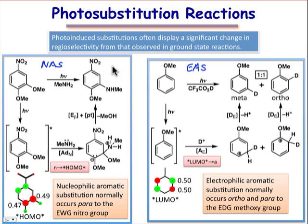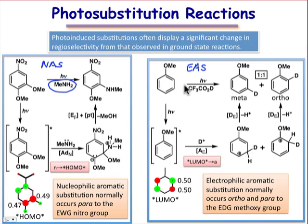Recall that under nucleophilic aromatic substitution, the aromatic ring acts as an electrophile, and there'll be an external nucleophile that will do the substitution. Under electrophilic aromatic substitution, the aromatic ring acts as a nucleophile, and there'll be an electrophilic species that will perform the substitution.